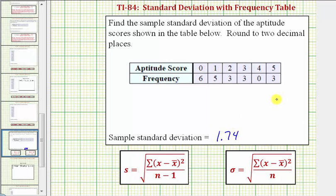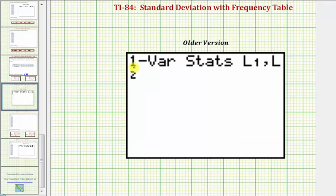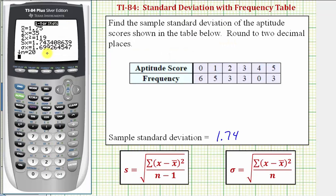I also want to show a screenshot of the older version of the TI-84, or the 83, just in case that's the calculator you have. On the older version, if you select the one var stats, it appears on the home screen, and then we have to enter where the data is located, comma, the location of the frequency. So we enter L1 by pressing second one, comma, which is above the seven, and then second two for L2. Once you press enter from here, we'd have the same screen here.